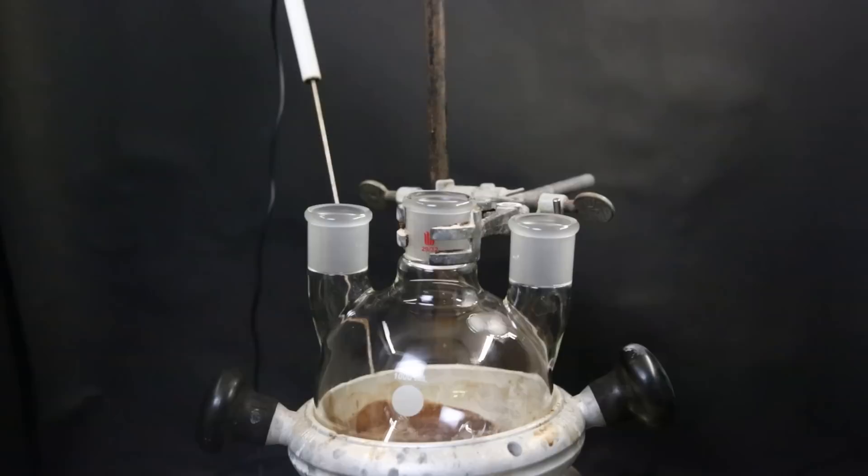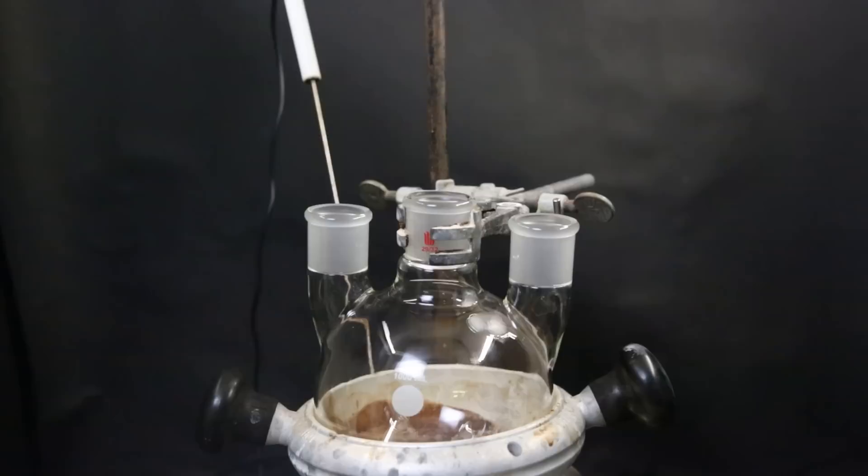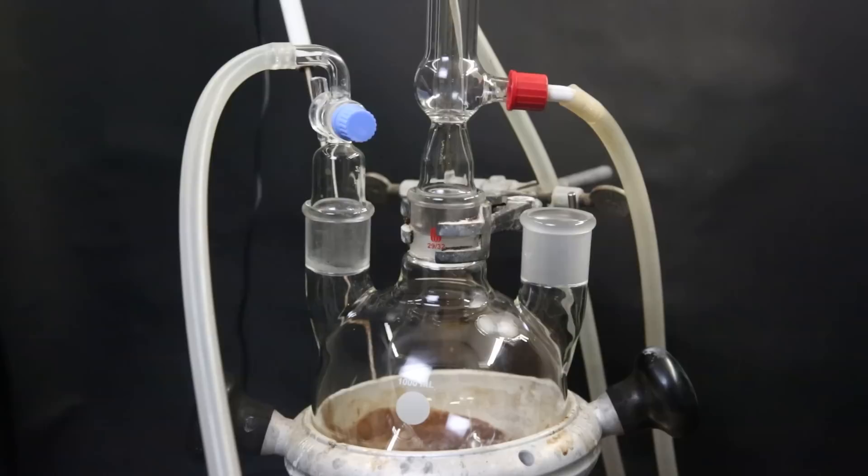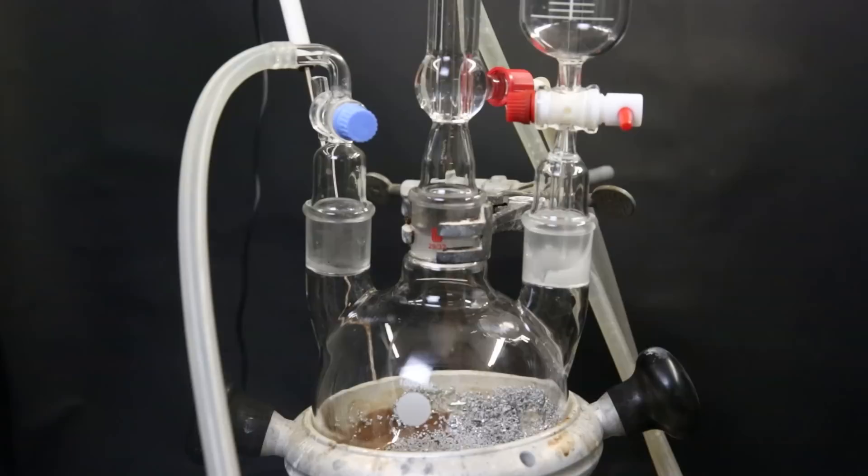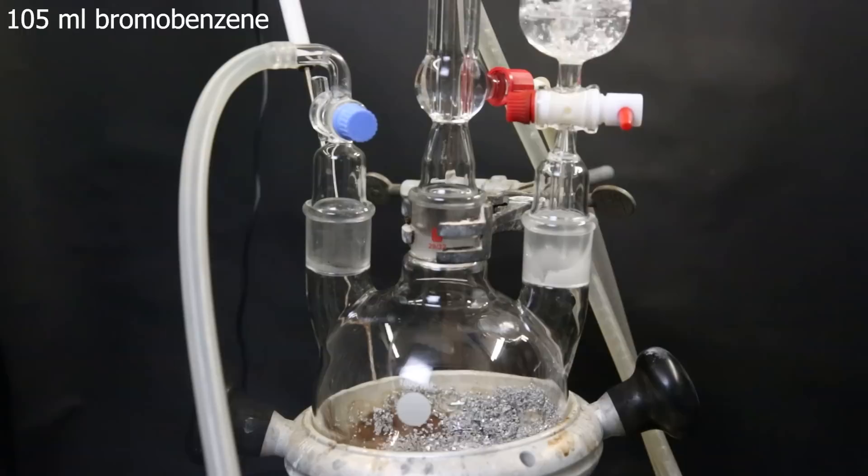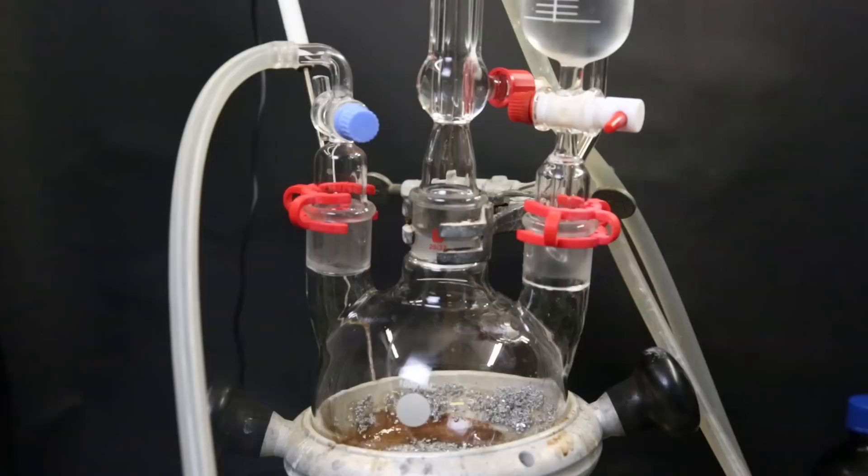So to get started, I set up a heating mantle and a 1-liter 3-neck flask. Then I attach a condenser and a gas adapter with a nitrogen line. I drop in a stir bar and attach a funnel. And then add 23.7 grams of magnesium turnings. On top of that, I add in 40 mils of ether and then swap the funnel for a dropping funnel.